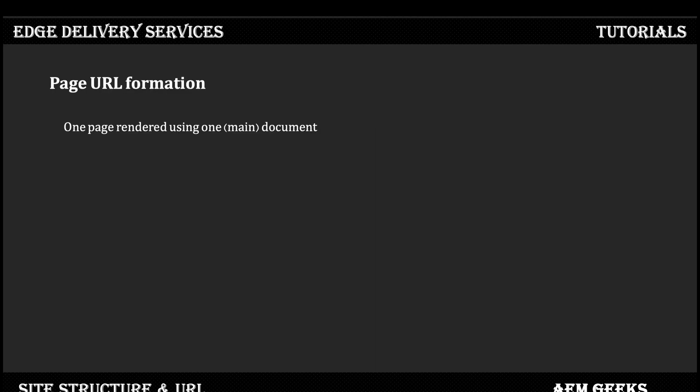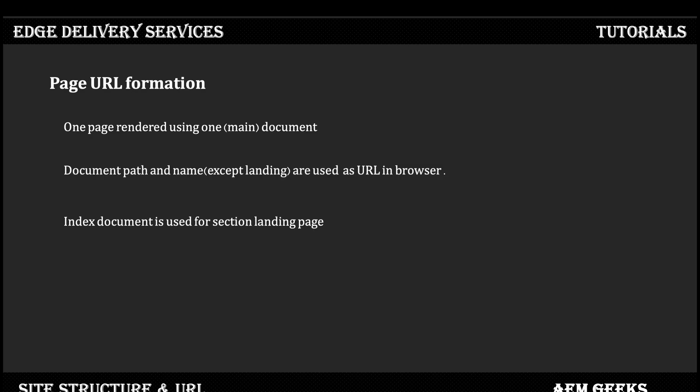The name of the document is very important. Whatever name you give that document in your Google Drive or SharePoint is used in the URL — that name is used when forming the URL. The folder that document is in is also considered when forming the URL. You are not creating those URLs manually; the URL is formed automatically. I'll explain that and show a demo as well.